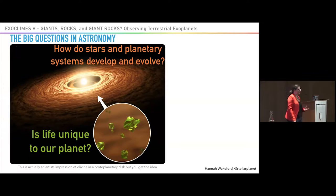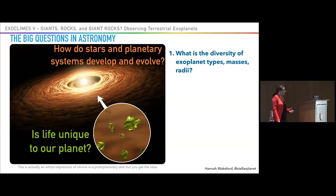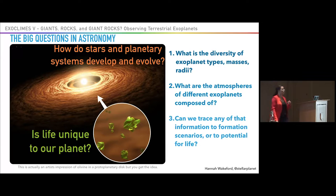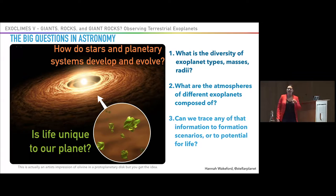We need to break it down further: what are the demographics of planets, how many different types are there, what are their radii and masses, what kind of stars are they around, what are the atmospheres made of? And can we take those links — the demographics, types, formation histories, atmospheric constituents — and bridge them back to those two big questions? That's fundamentally what we're trying to do.